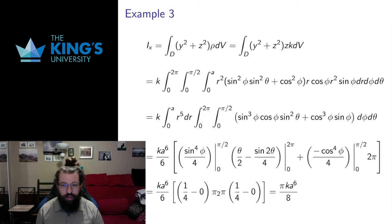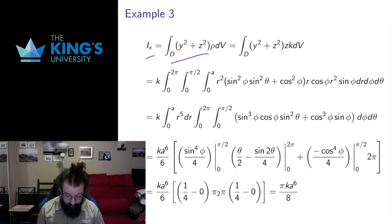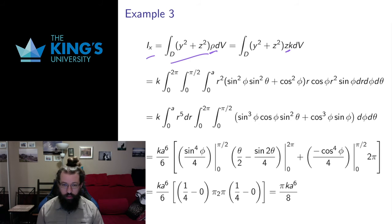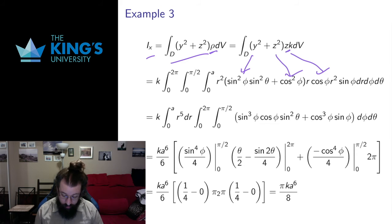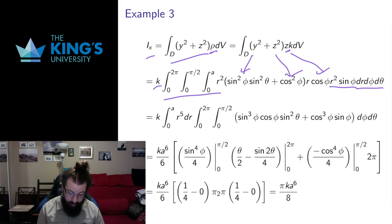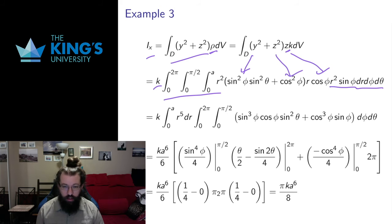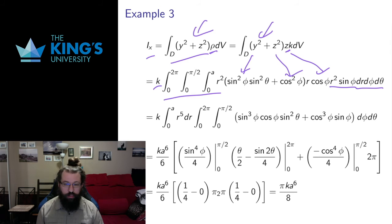Now I'll briefly set up the rest of the calculations for the second moments. Using the formulas for moments of inertia and including the density kz, I change everything into spherical coordinates: y squared becomes r squared sine squared phi sine squared theta, z squared becomes r squared cos squared phi, and z becomes r cos phi. With the Jacobian and the infinitesimal terms, this produces some fairly complicated integrals — but it's all just translating from Cartesian expressions into spherical expressions.